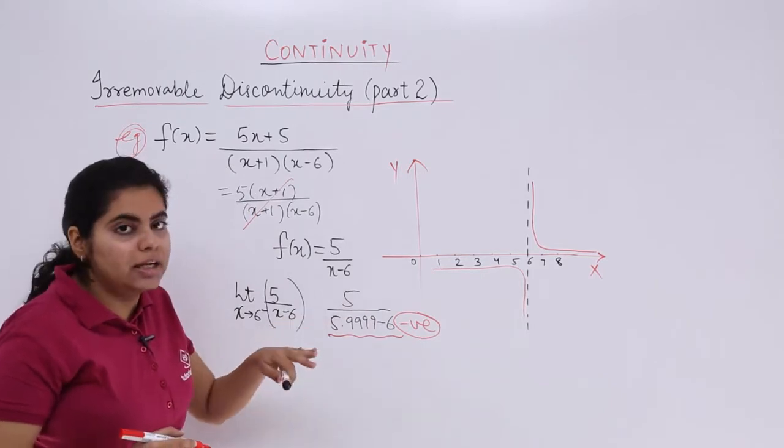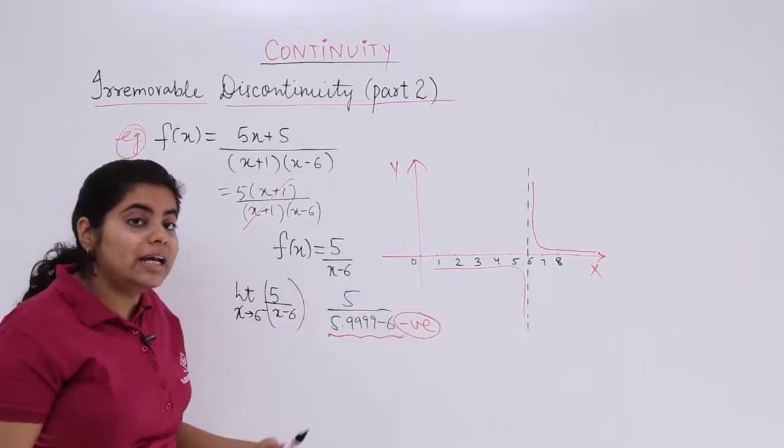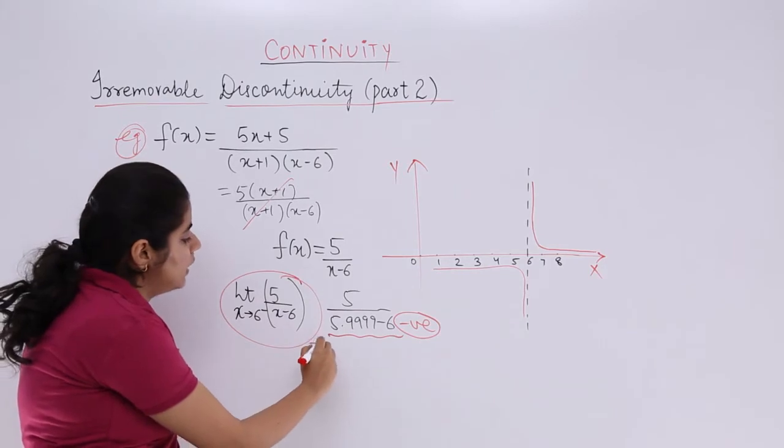Downwards, the denominator will be negative. 5 upon negative will again give me a negative value. So LHL is negative.